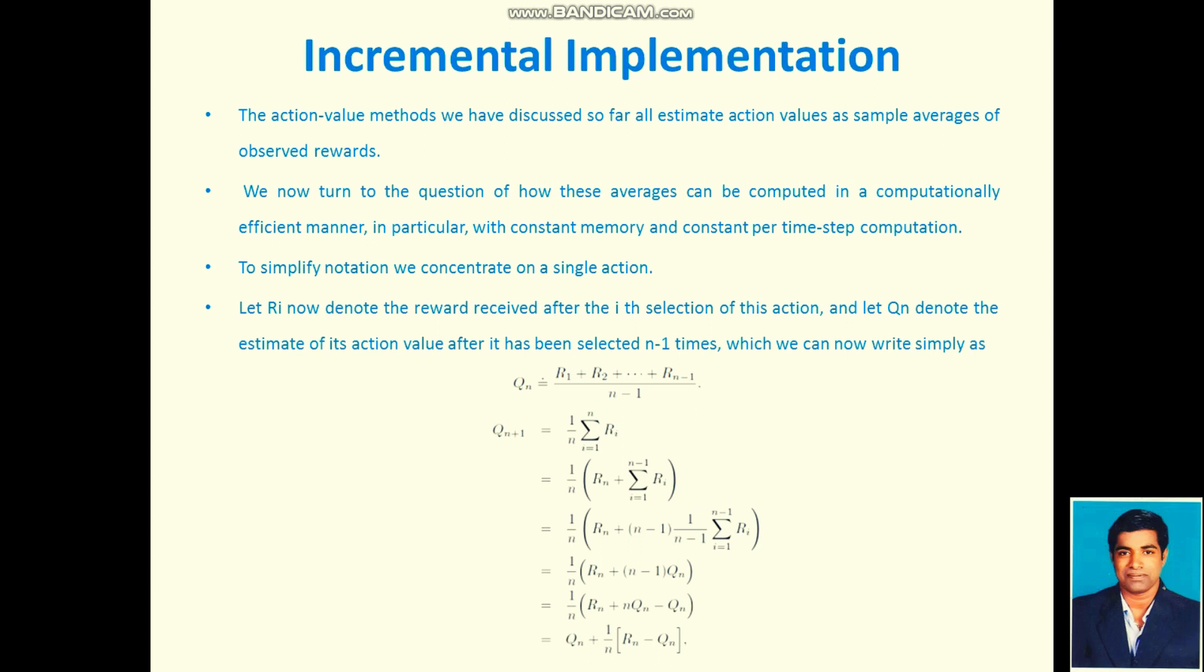Now, multiplying Qn with n minus 1, I am getting 1 by n of rn plus n Qn minus Qn. So the final derivation: 1 by n of n Qn, if I divide by n, I get Qn plus 1 by n of rn minus Qn. This is the incremental implementation factor.